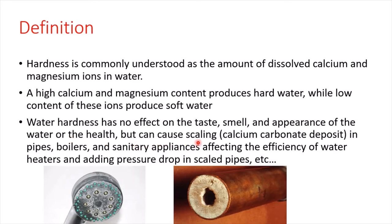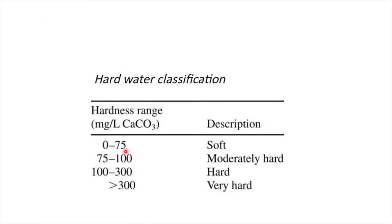The major problem with hard water is scaling. We will have a calcium carbonate deposit — as you can see in this picture — and this can occur in our pipes, boilers, and sanitary appliances within the house. This will affect the efficiency of water heaters and will add pressure drop within the scaled pipes.